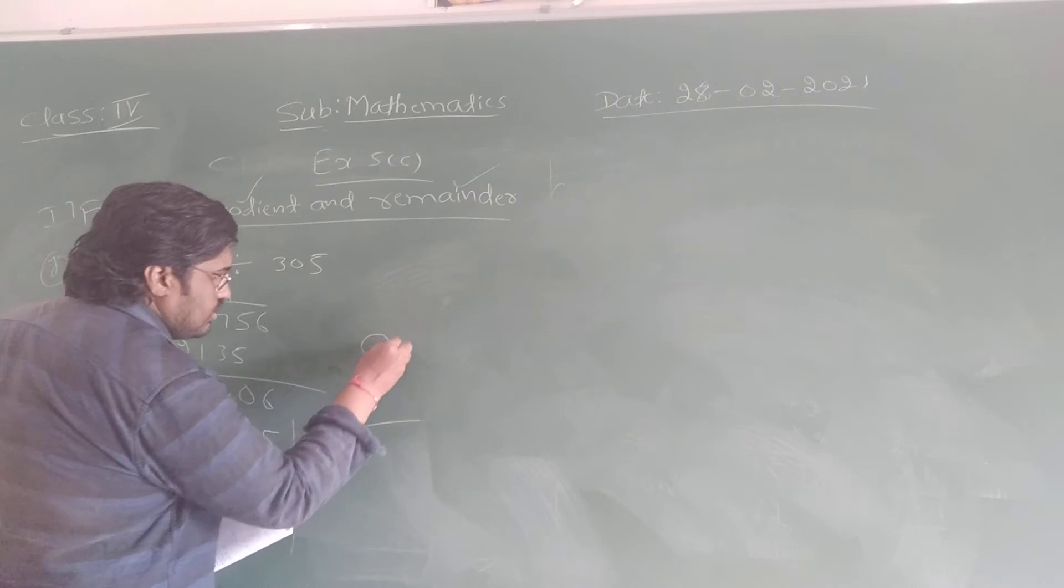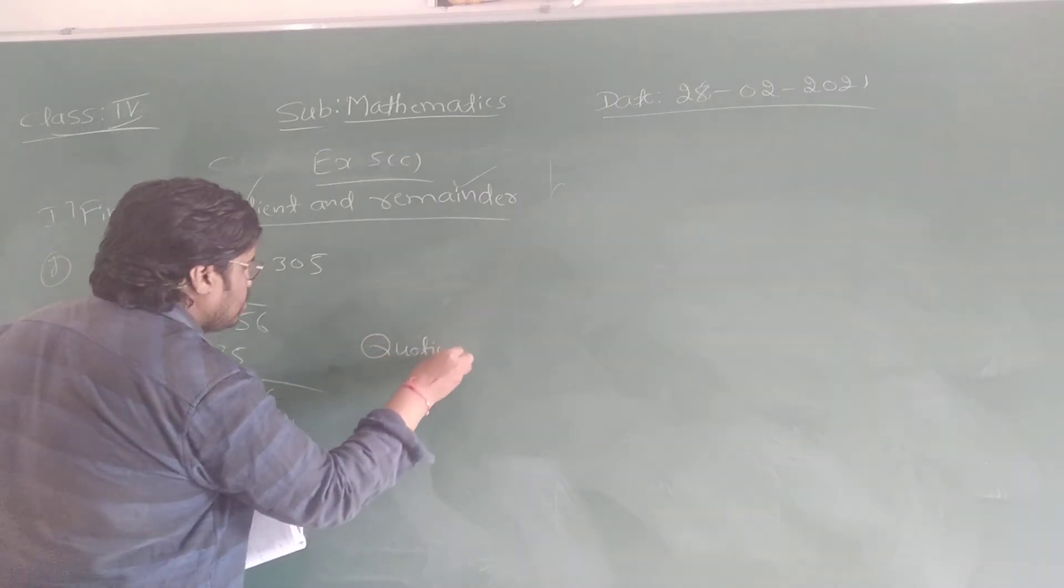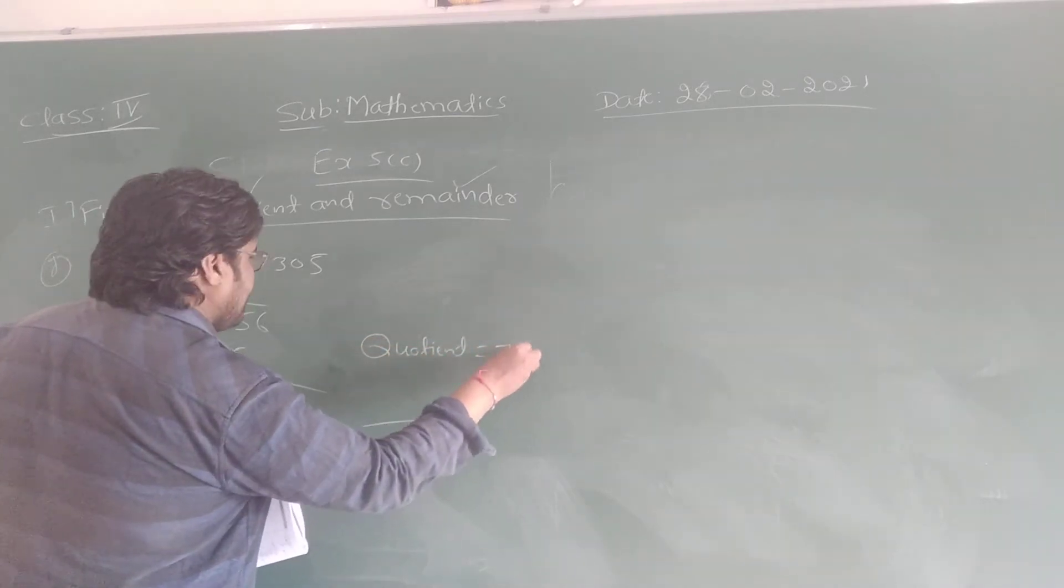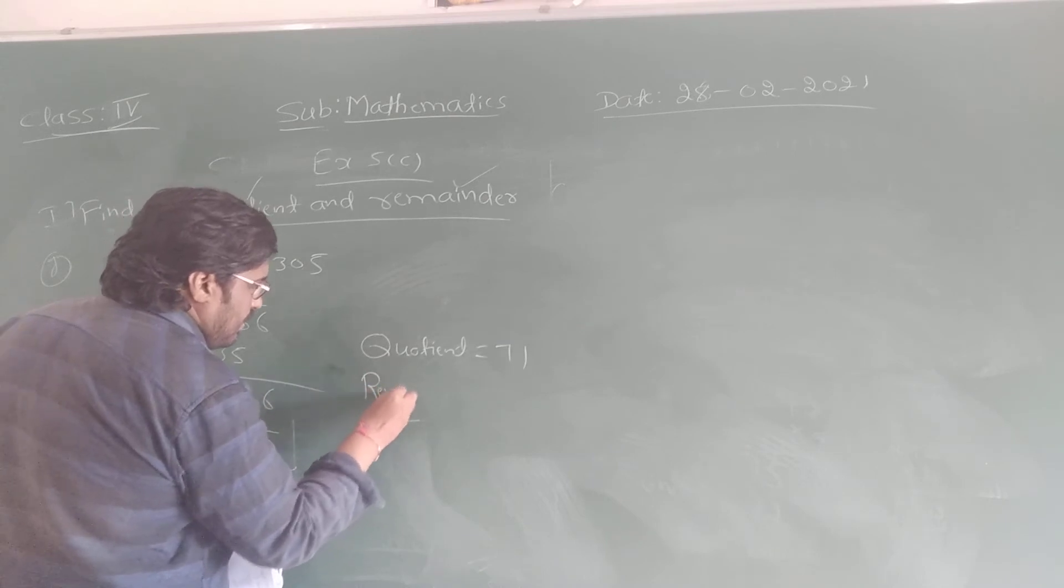So the quotient, what is the quotient? Quotient is 71. And reminder, reminder is 101.